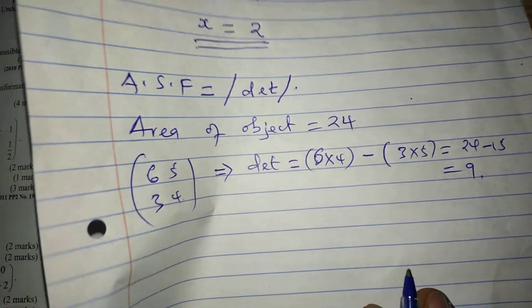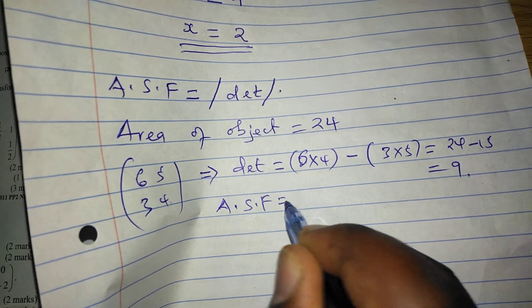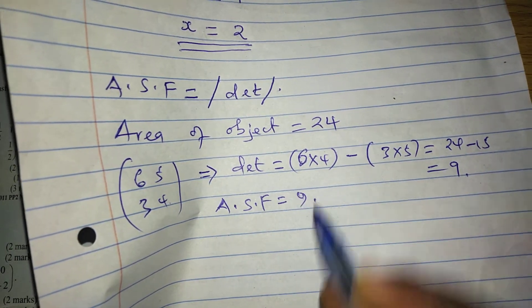If 24 minus 15 is 9, that means our area scale factor is 9.